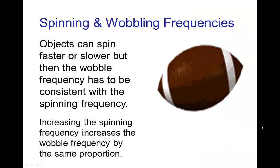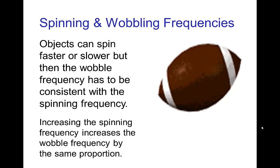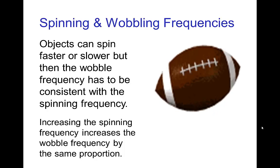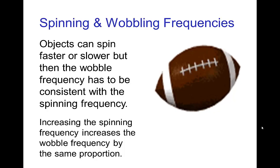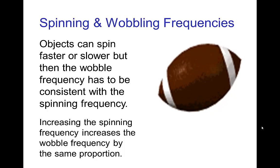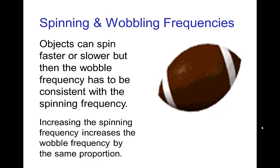Now, when something is spinning and, a symmetric object like the plate or the football, when it's spinning and wobbling, you can spin the football faster or you can spin it slower. But in all cases, the ratio of the number of spin rotations to the number of wobble oscillations always stays in the same ratio depending on the shape of the object.